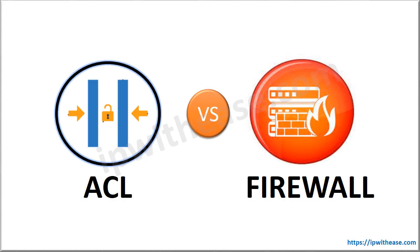ACL vs Firewall. While deploying security solutions in infrastructure setups, administrators may be challenged with the verdict on whether to consider ACL, i.e. access control list, or use a firewall to secure the LAN network setup. From a bird's eye view, it may seem that ACL also filters traffic, mostly LAN and WAN communication, like the firewall does. However, there is more to it than meets the eye — firewalls are much more than just traffic filtering. Let's start with the key differences between both terminologies.